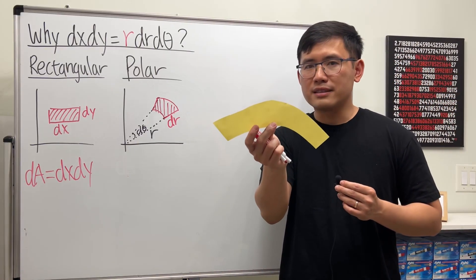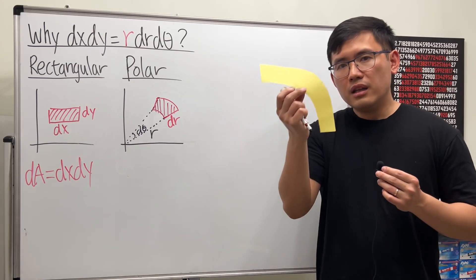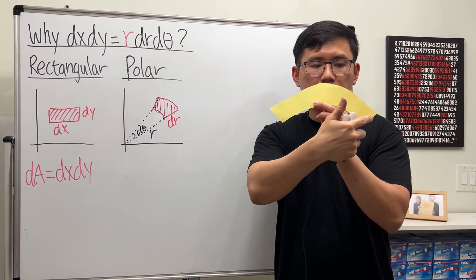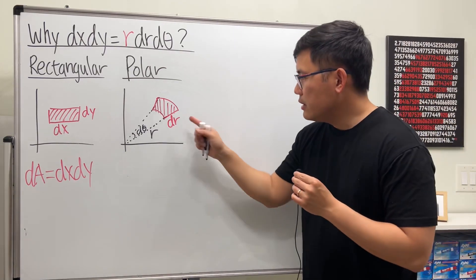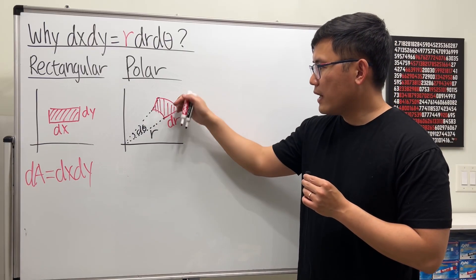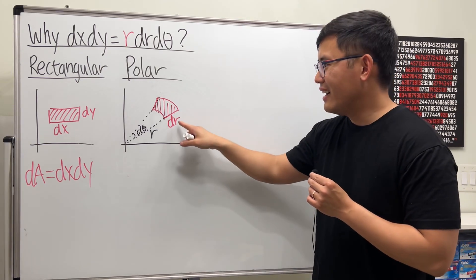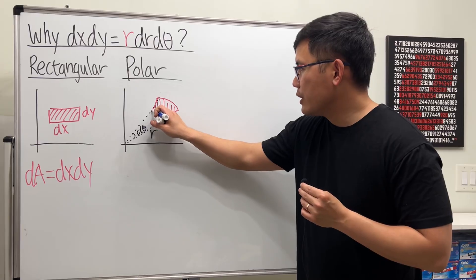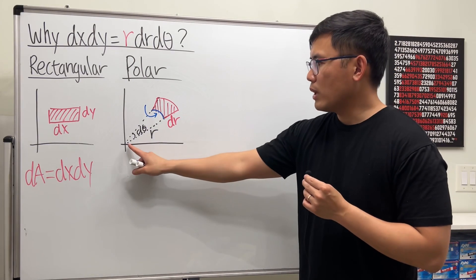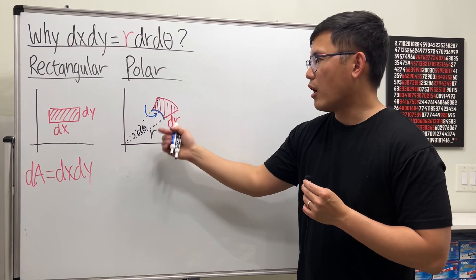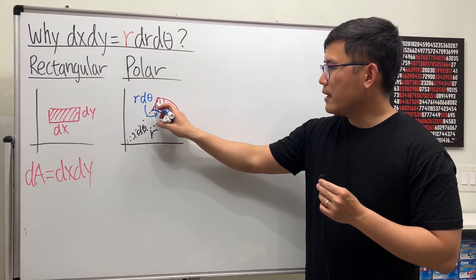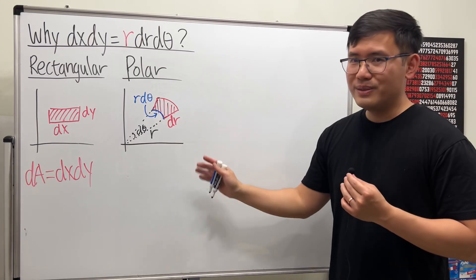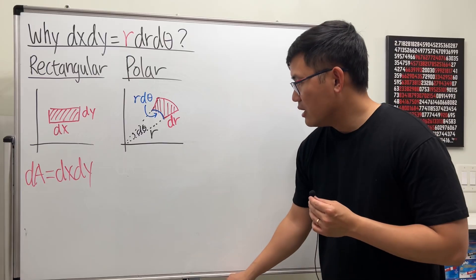Now we have to find this area, which is the area of a curved rectangle — also called a polar rectangle. The formula requires knowing the width and then multiplying by the arc length in the middle. We already have the width dr, and since dr is very small, it's okay to approximate the arc using r times dθ for this arc portion.